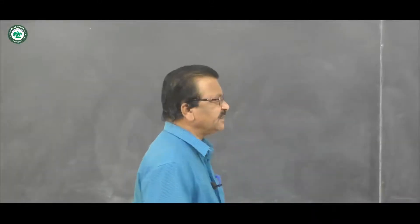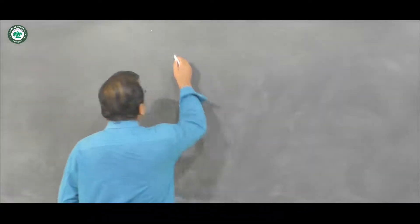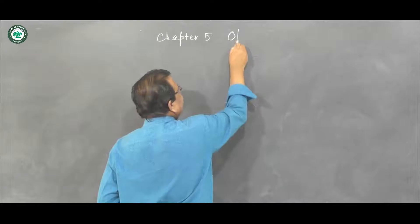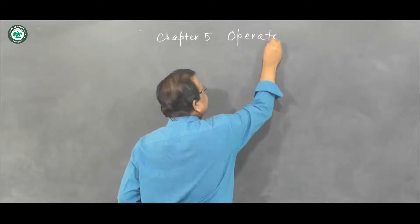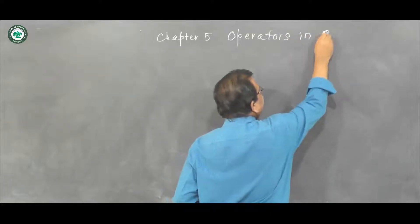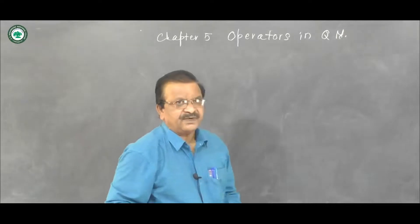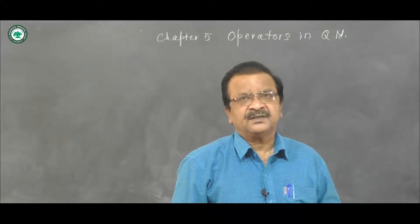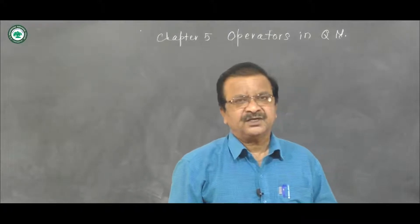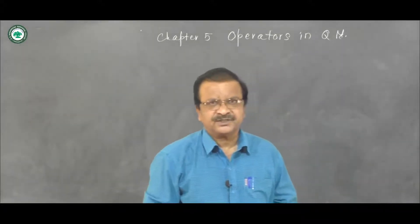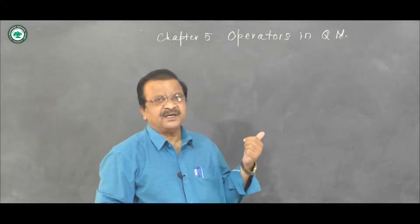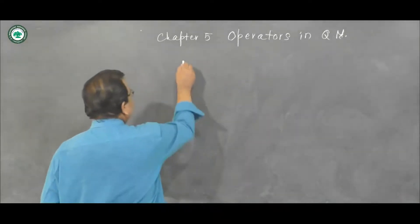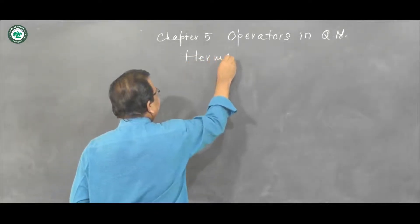Today we will begin with the fifth chapter of quantum mechanics: operators in quantum mechanics. I will discuss this chapter first, then come to the third chapter on applications of the time-independent Schrödinger equation, and then the fourth chapter on spherically symmetric potentials. This chapter being relatively simpler and short, we are going to attempt it first. The first article we are going to discuss is Hermitian operators.